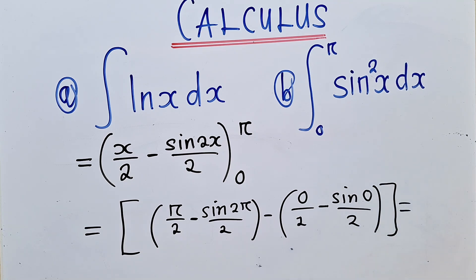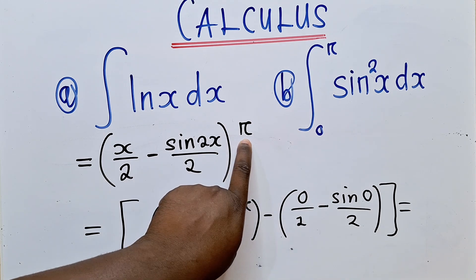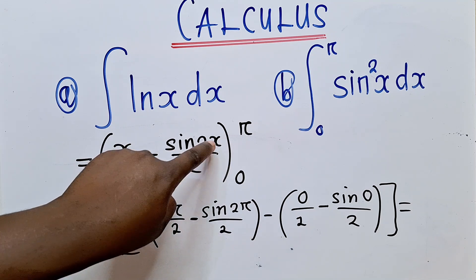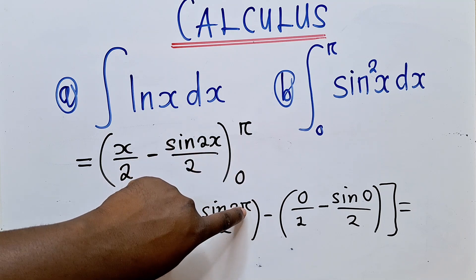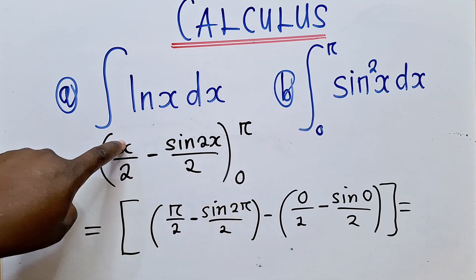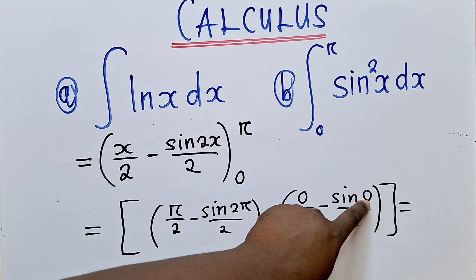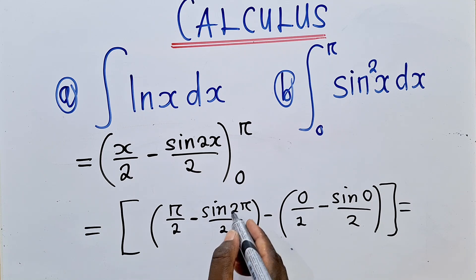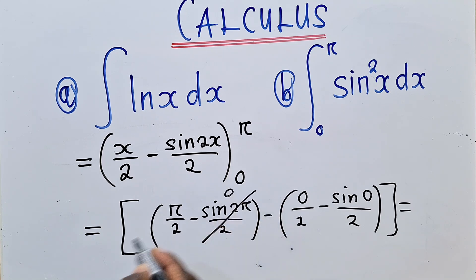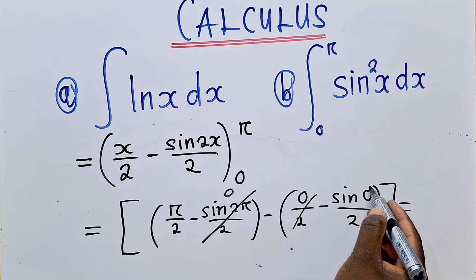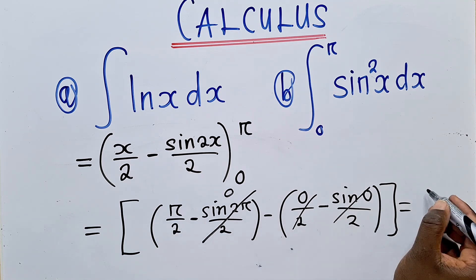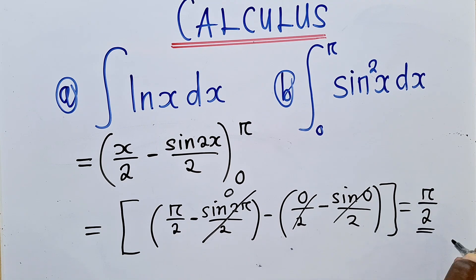The π was put where x is here and here. After putting π, you say minus, and then you put the 0 here and here. When we say sin(2π), this will just give us 0. So 0 divided by 2 is 0. All these terms with sin will be 0. So it will be π over 2 minus 0, which gives us a final answer of π over 2.